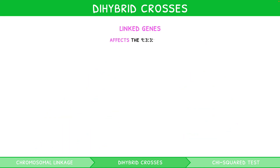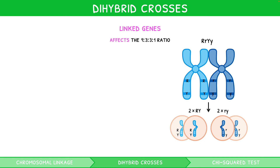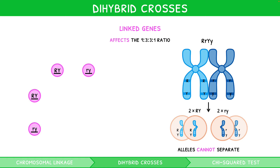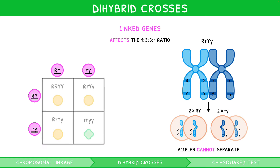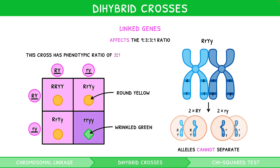However, linked genes affect this 9:3:3:1 ratio. Using the same example but assuming the genes for seed shape and colour are linked, starting with the same parents (RrYy), there would be only two gametes for each parent — RY and ry — since the alleles are on the same chromosome and cannot separate. Completing a Punnett grid with these two gametes produces four offspring genotypes: RRYY, RrYy, RrYy, and rryy. These correspond to the phenotypes of round yellow and wrinkled green only, so dihybrid crosses of two linked genes produce a phenotypic ratio of 3:1, identical to monohybrid crosses.